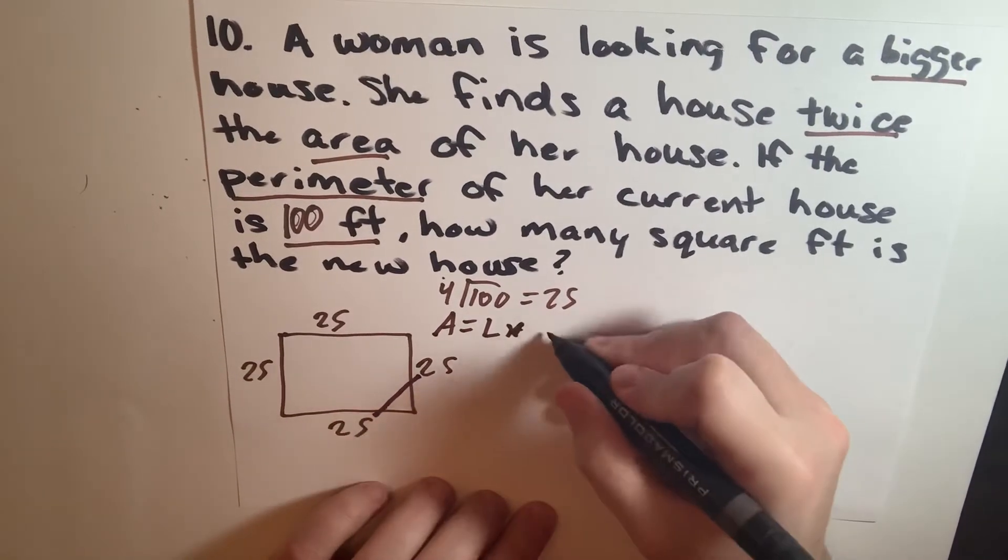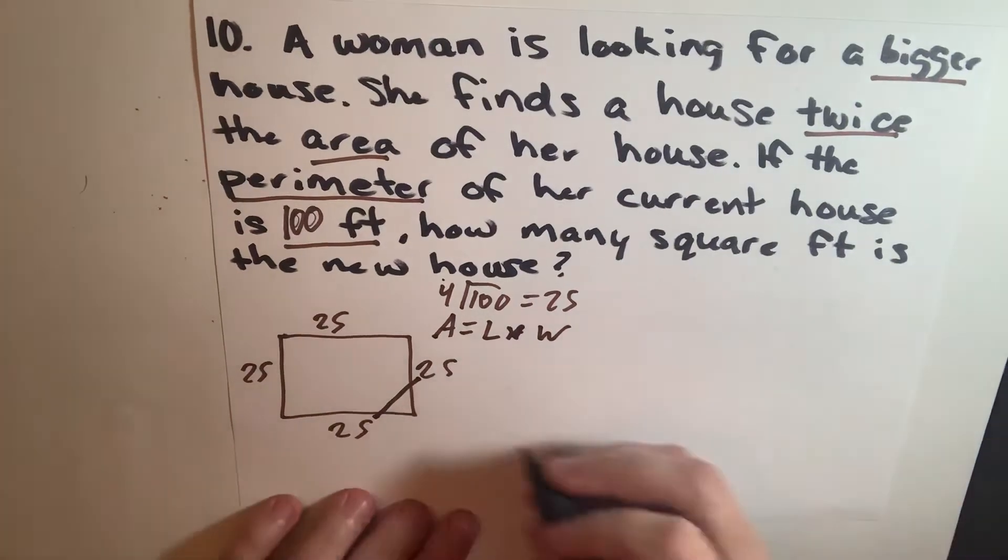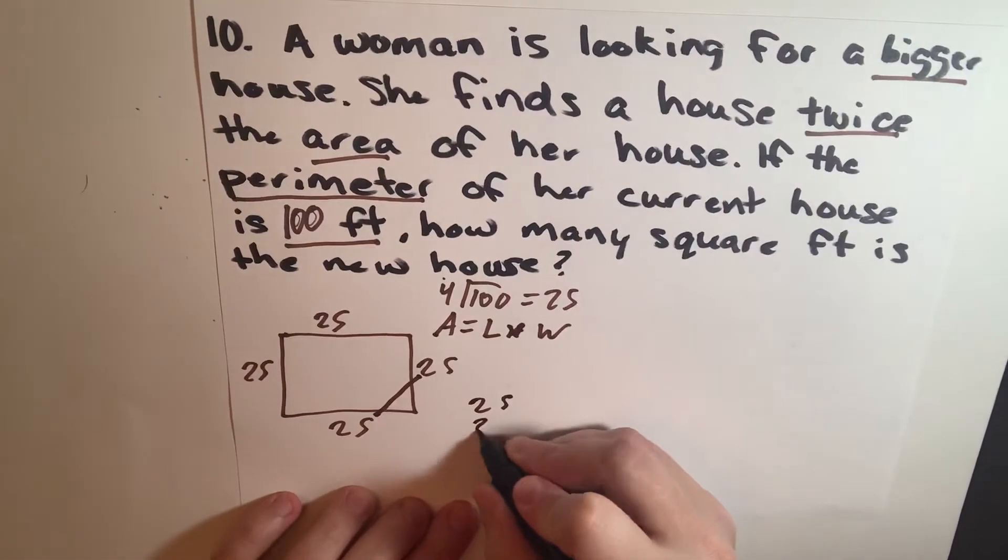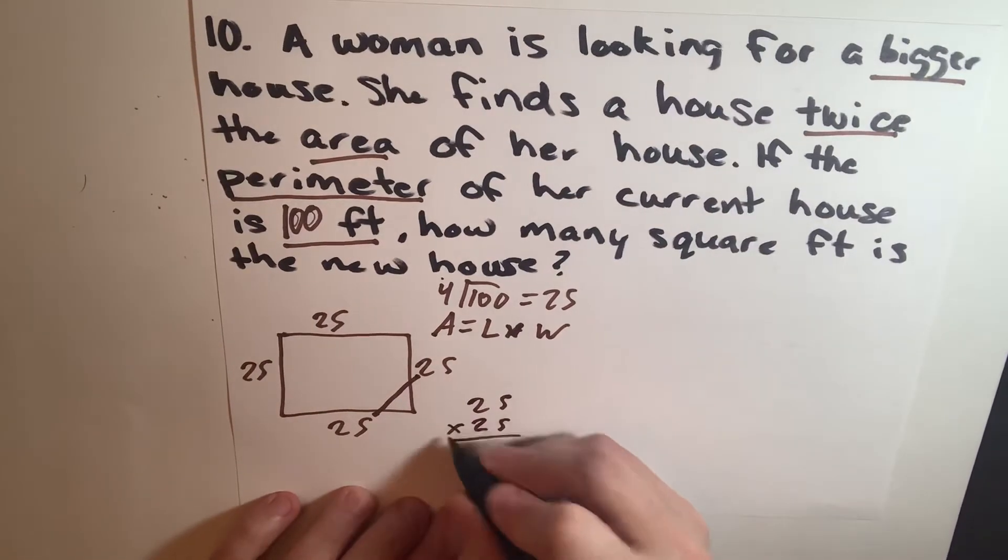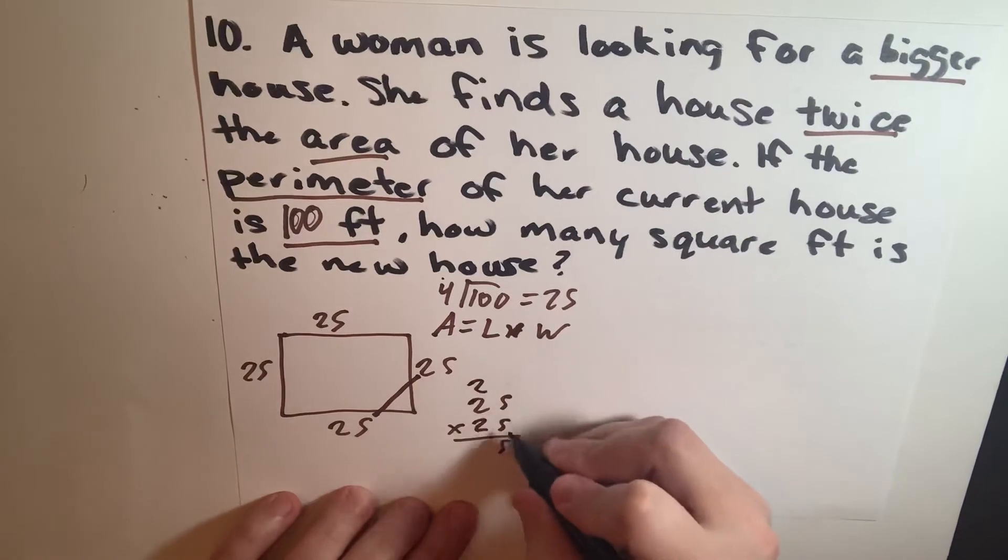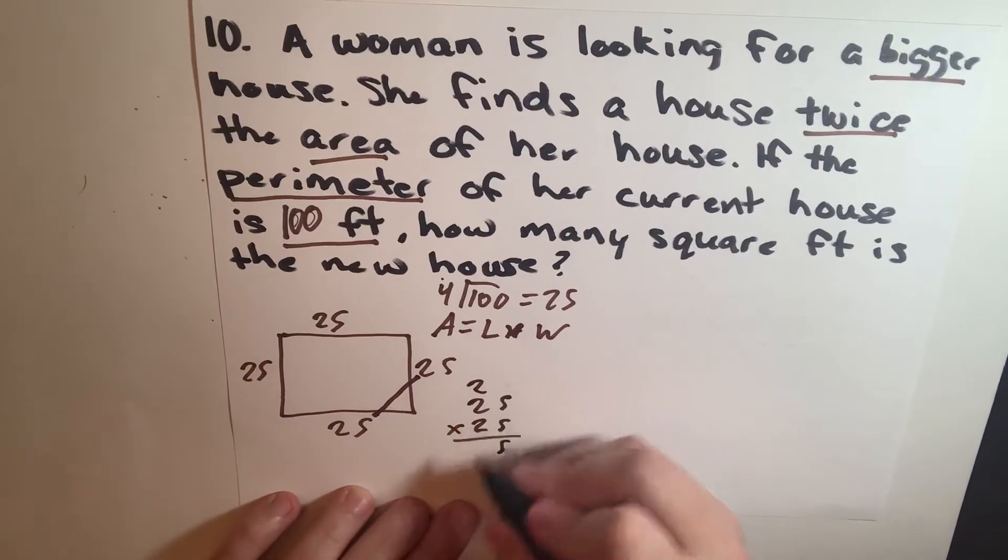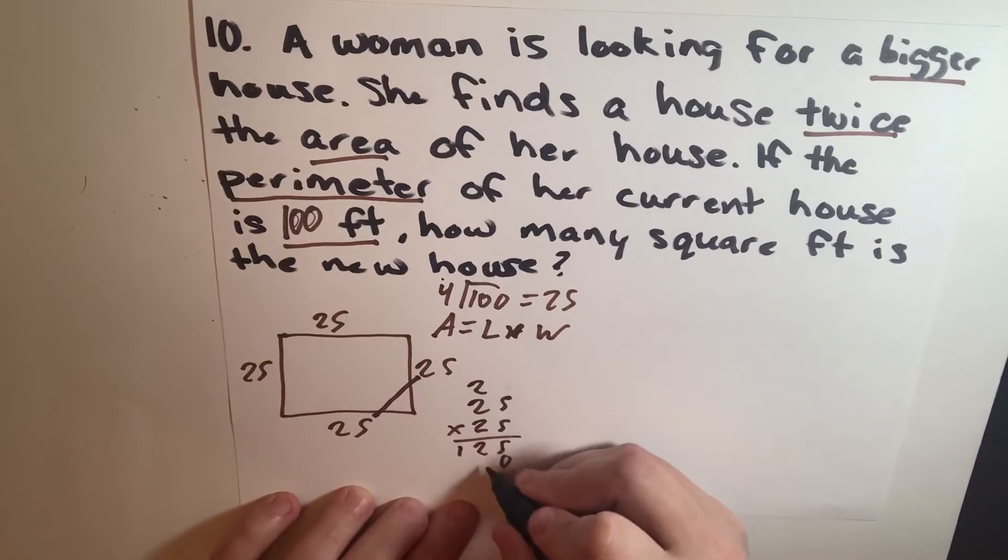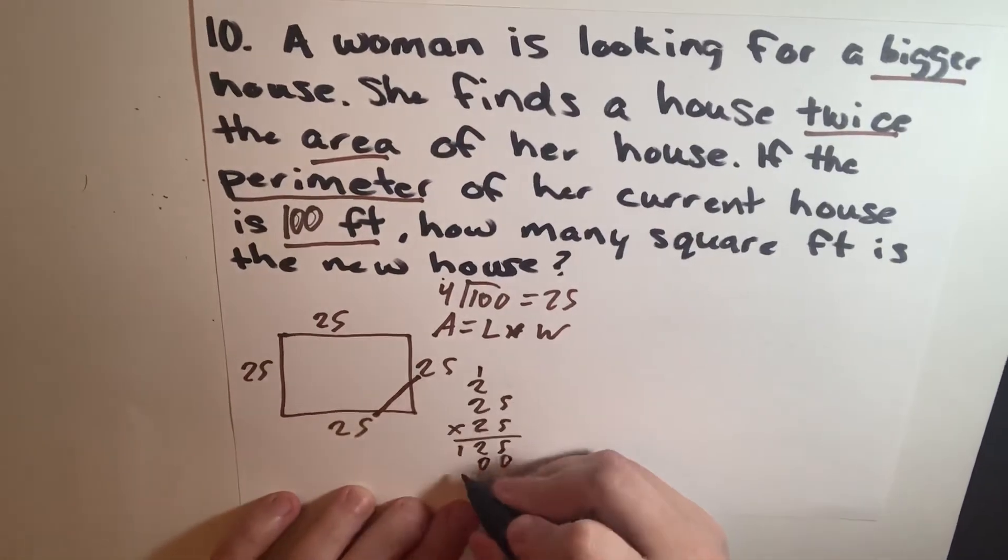So 25 times 25 equals... we have 5, 2, we have 12, 0, 2 times 5, 0, 10, and...